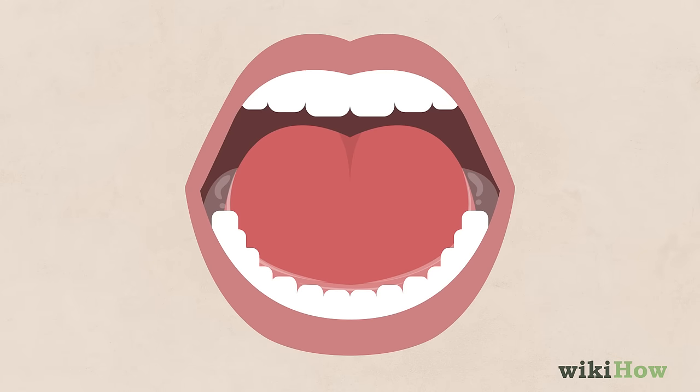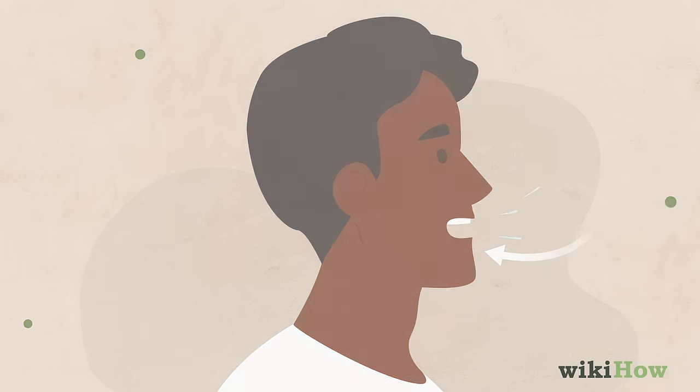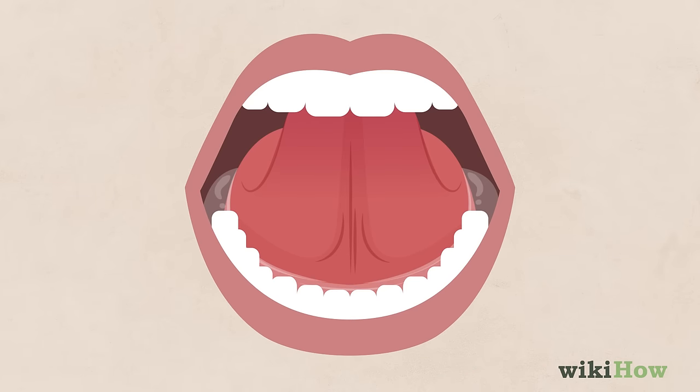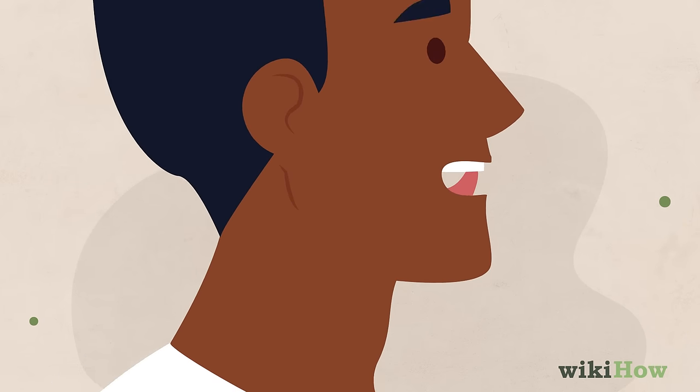Once you have saliva in your mouth, take a deep breath. Then quickly flex your tongue against the roof of your mouth, and open your mouth and push your bottom jaw out to gleek.